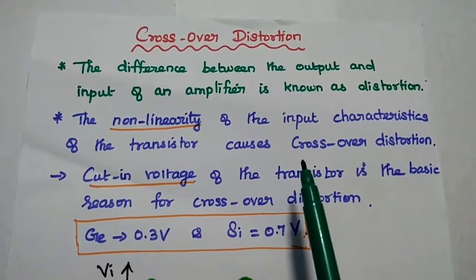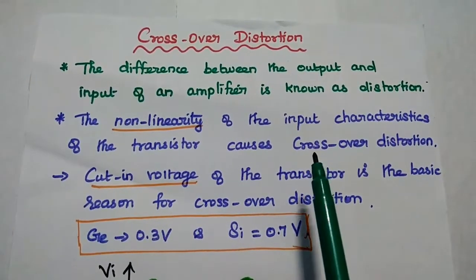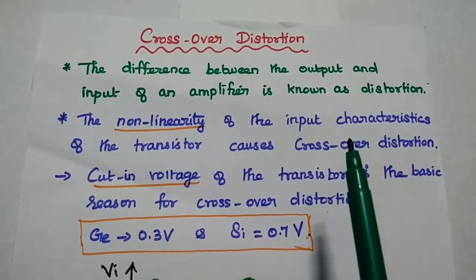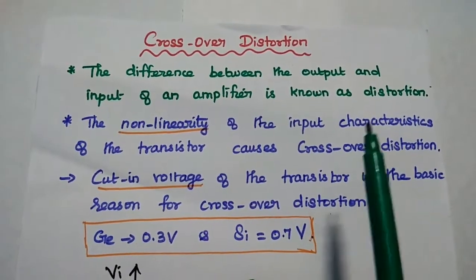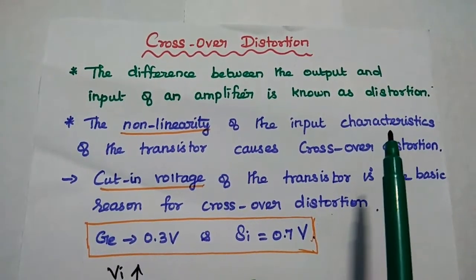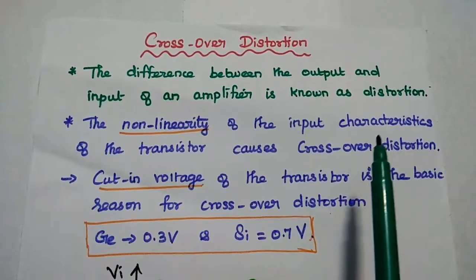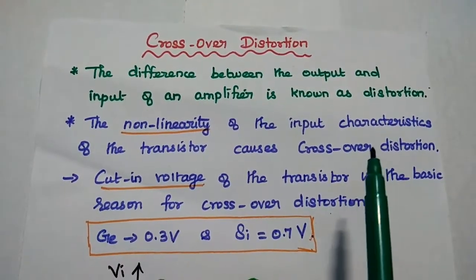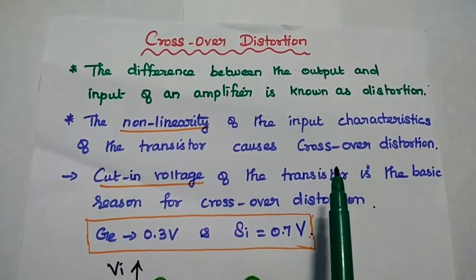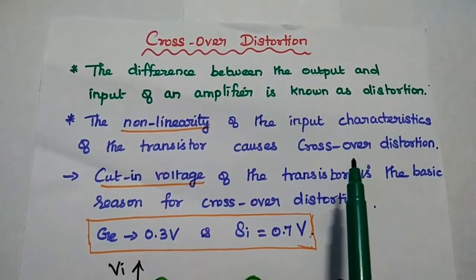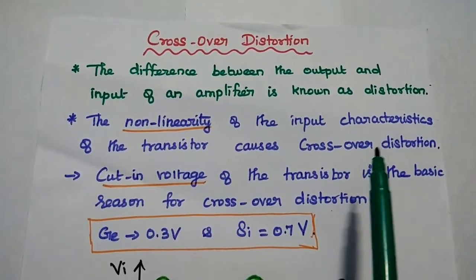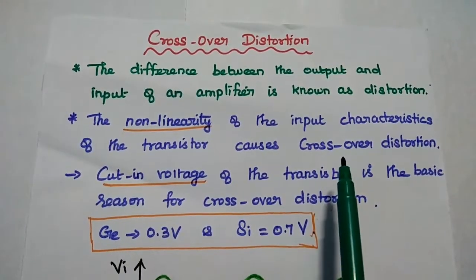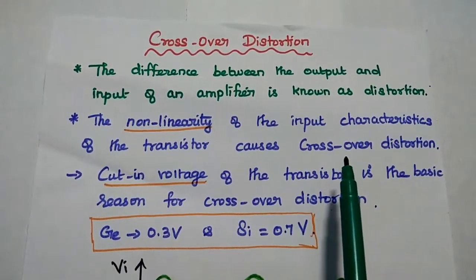Now we are going to discuss crossover distortion in class B amplifier and how to eliminate it. In general, distortion is nothing but the difference between the input and output of an amplifier. Crossover distortion is the major drawback of class B amplifier, which is mainly caused by the non-linearity characteristics of the transistor.